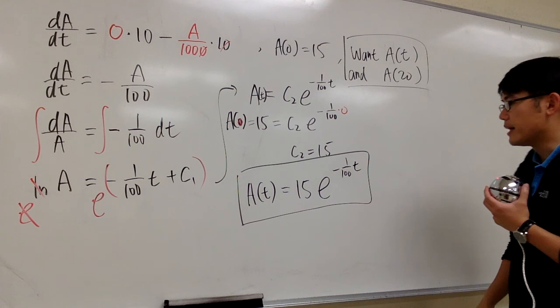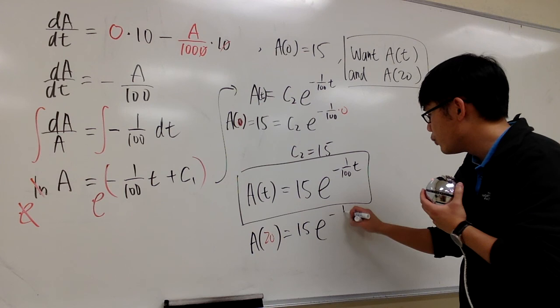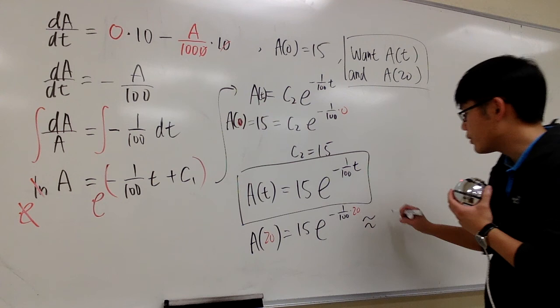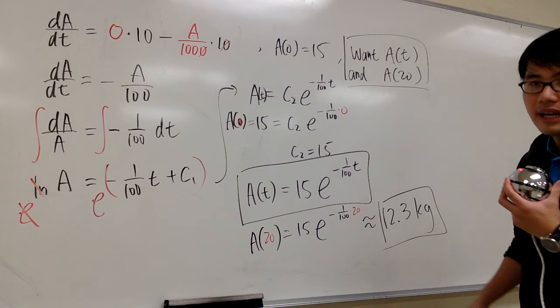And for the second part, we just plug in 20. So, we have A of 20, plug in 20 into T, and we have 15 times e to the negative 1 over 100 times 20. And just do this on your calculator, and we will get 12.3 kilograms. So, there will be 12.3 kilograms of salt in the tank after 20 minutes. And this is it.